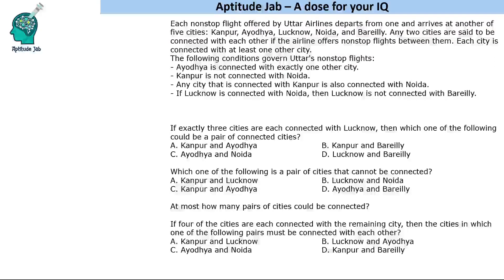Hello everyone, welcome to Aptitude Lab. This is a set based on selection. It says there are flights offered by Uttar Airlines that depart from one and arrive at another of these 5 cities: Kanpur, Ayodhya, Lucknow, Noida, and Bareilly. Any 2 cities are said to be connected with each other if the airline offers non-stop flights between them. Each city is connected with at least one other city.